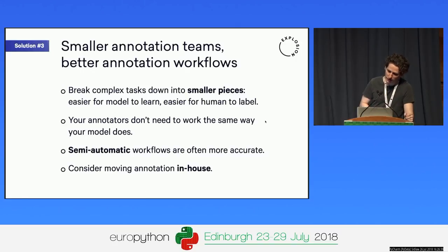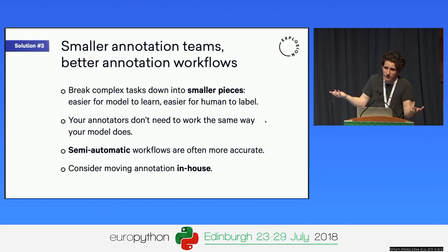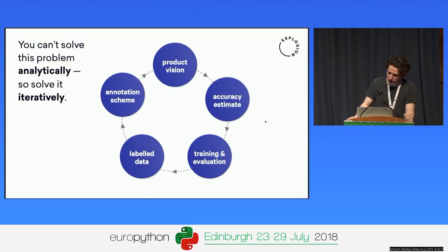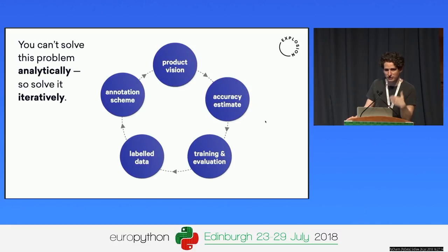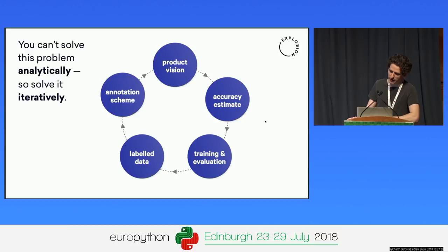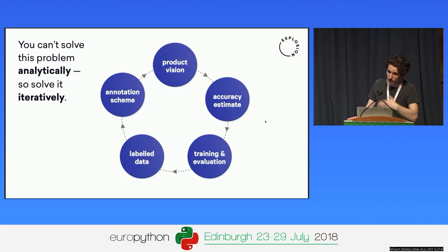Also, if annotation teams are smaller rather than larger, that's quite good because it lets you iterate. If you need 100 hours of annotation, it's much better to have three people working for a period of time rather than 100 people doing one hour — then you don't get any time to iterate. As with any other cyclic dependency, we can't solve this analytically; we have to solve it iteratively. As quickly as possible, start moving through the cycle: ask what it would look like if we could make this work, plug in the model, see if it works. Moving around that cycle quicker leads to better results rather than getting lost in TensorFlow for weeks improving accuracy on a dataset that might not even be right.